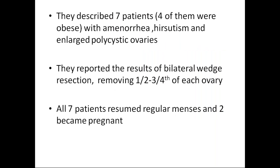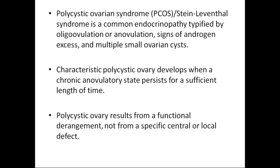What Stein and Leventhal did was they described seven patients with amenorrhea and hyperandrogenic features like hirsutism, with enlarged polycystic ovaries. They reported results after bilateral wedge resection — that is, removing half to three-fourths of each ovary. After wedge resection, all seven patients resumed regular menstruation and two of them became pregnant. From this study, they described polycystic ovarian syndrome characterized by hyperandrogenism.